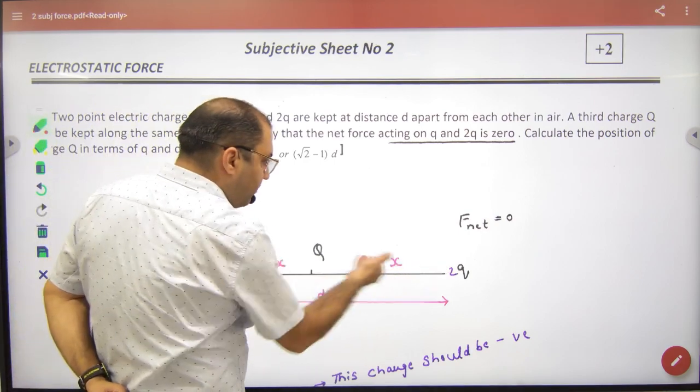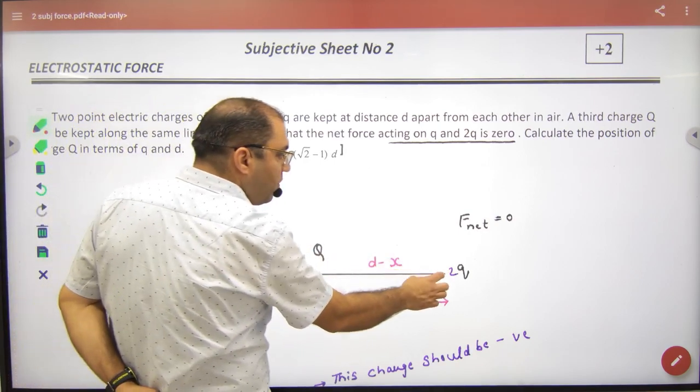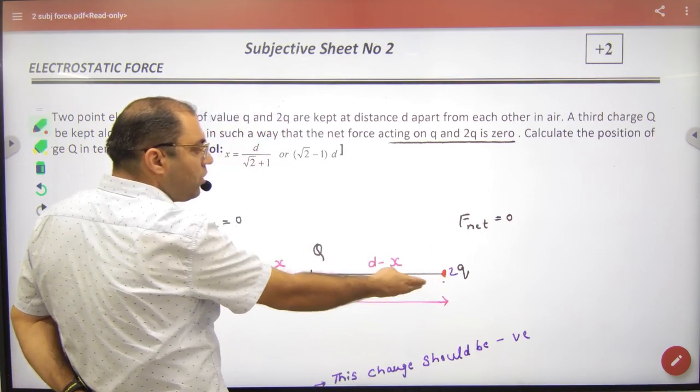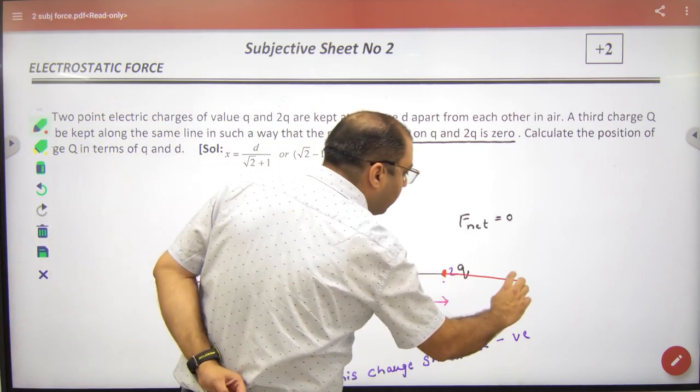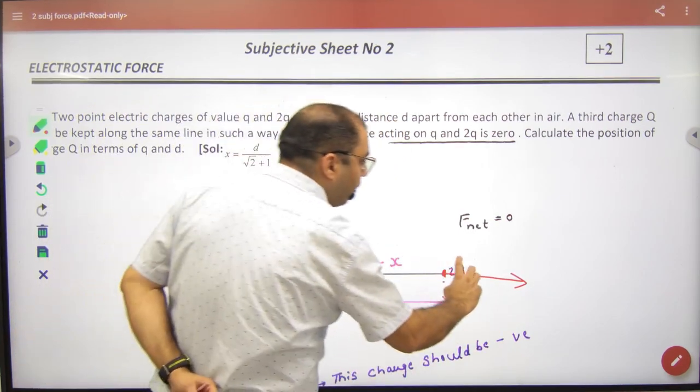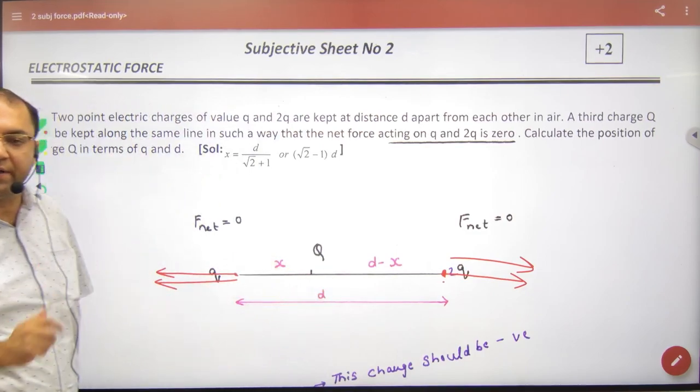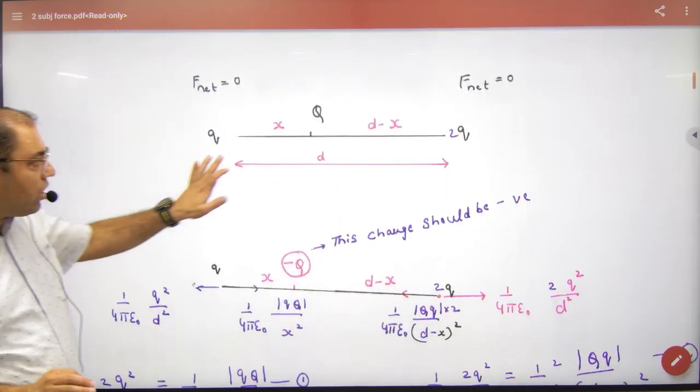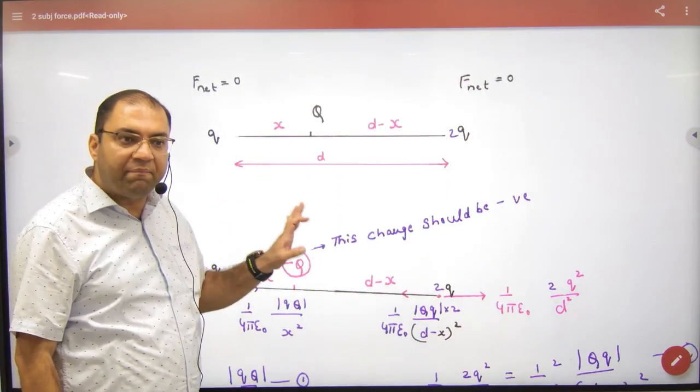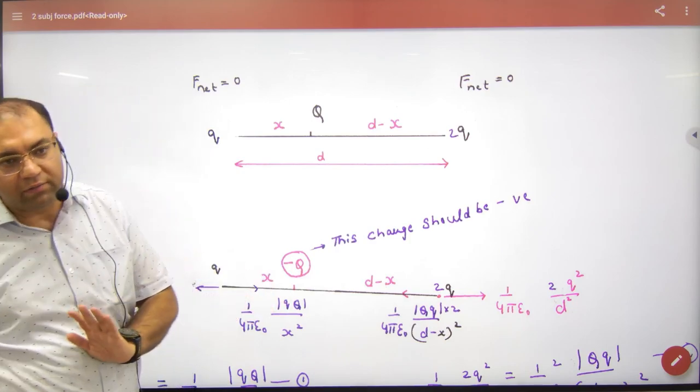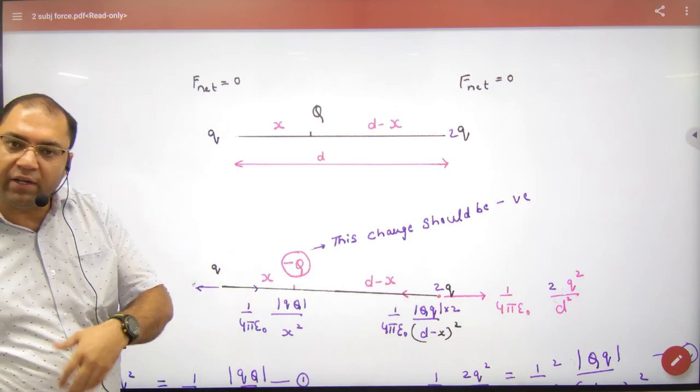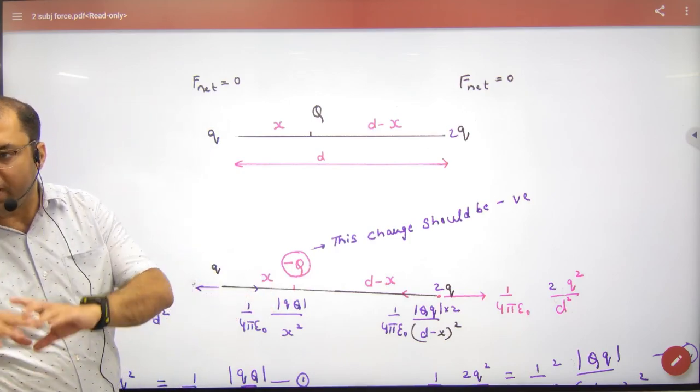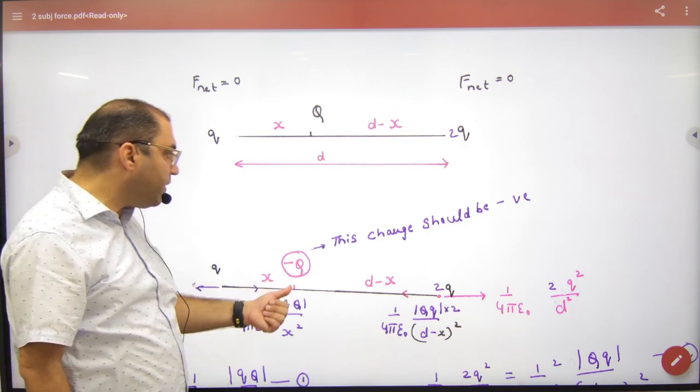Same situation is with this. This positive, this positive, this positive. To make net force zero on this, when you draw forces on this, capital Q will repel 2Q, small Q will repel 2Q, then answer won't be zero. So the person solving this question should understand - should this charge I'm assuming be positive or negative? You have to try this to find out.